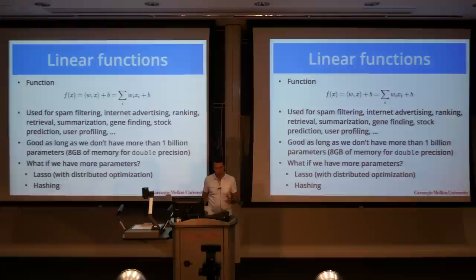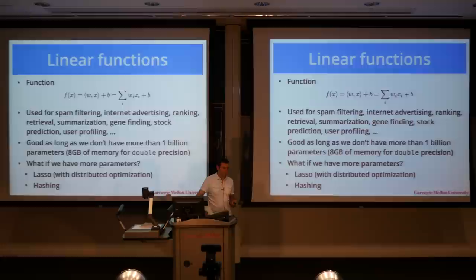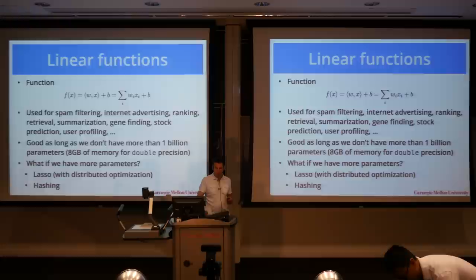Now, the catch is that those models work really well as long as we don't have too many parameters. Because at least, if I store things inefficiently as a double, I need about eight bytes per floating point number, so I'll end up with about eight gigabytes of memory for a billion floating point numbers. If I have a sparse data structure where I have to store the hash of the word ID, I might end up paying something like 12 bytes. So eight to 16 gigabytes is not an unreasonable amount of memory for a billion parameters.